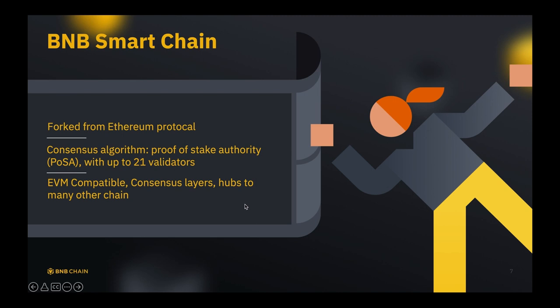The consensus algorithm for BNB Smart Chain is called Proof of Stake Authority, also known as PoSA, with up to 21 validators. PoSA is a hybrid between Proof of Staking and Proof of Authority consensus mechanisms. Validators are participants who stake a certain number of BNB, and when they propose a valid block, they receive transaction fees as a reward — so no new BNBs, only gas fees from transactions. Active validators are determined by ranking all validators according to the number of BNB tokens they hold. The top 21 validators take turns validating blocks, and the validator set is determined once a day and stored on Binance Chain.